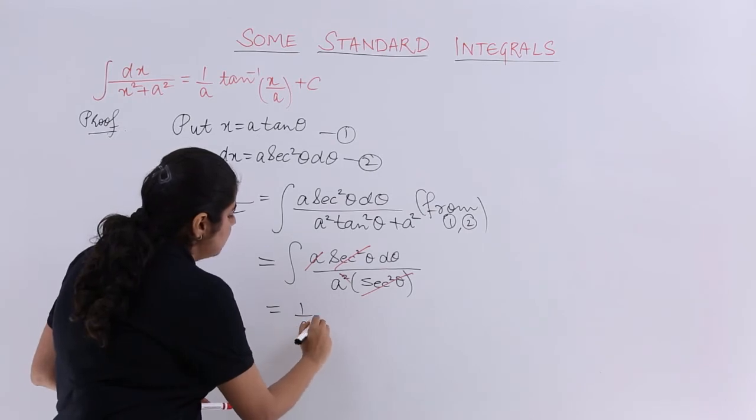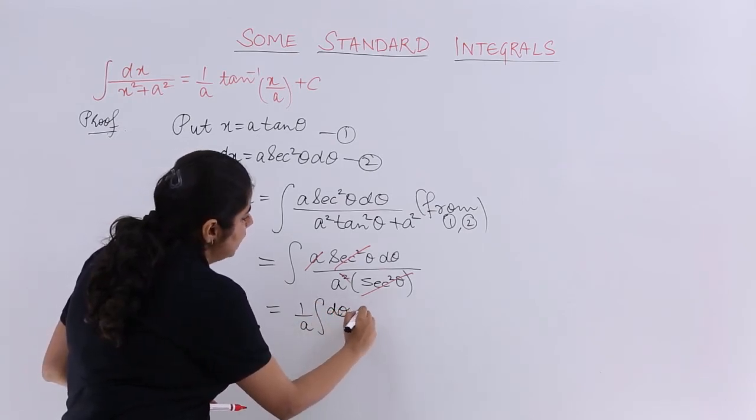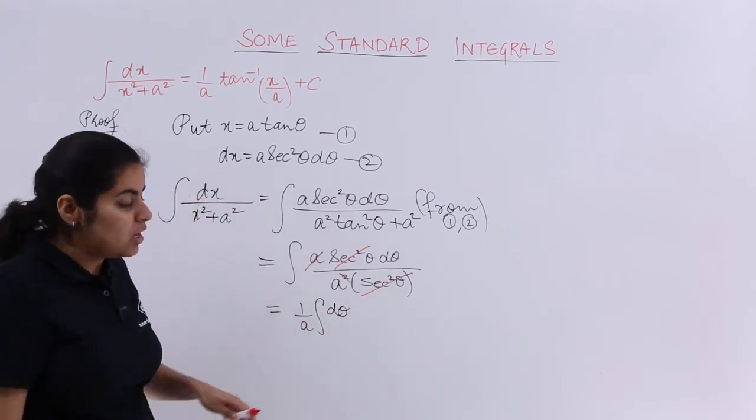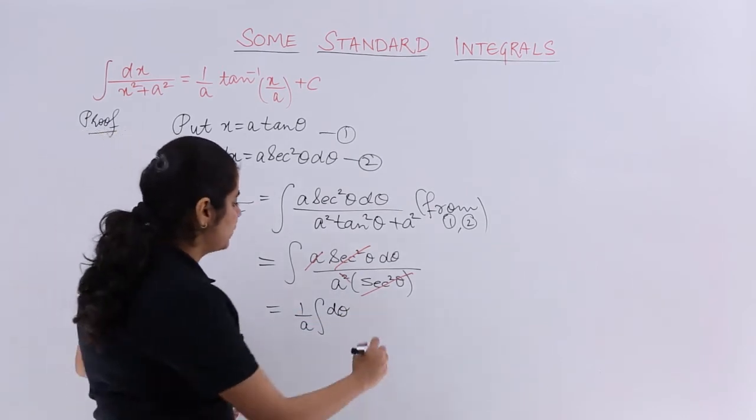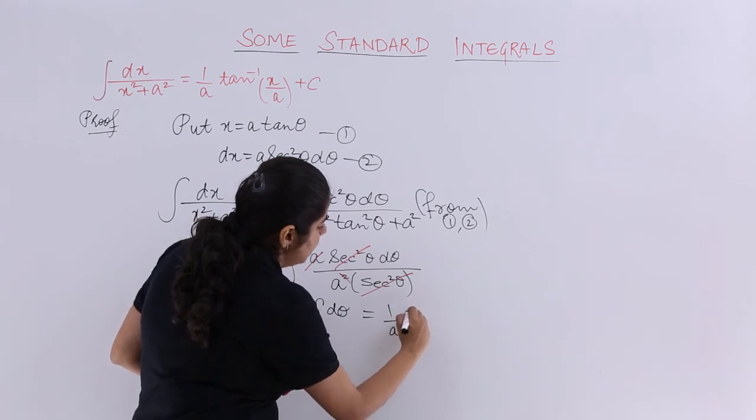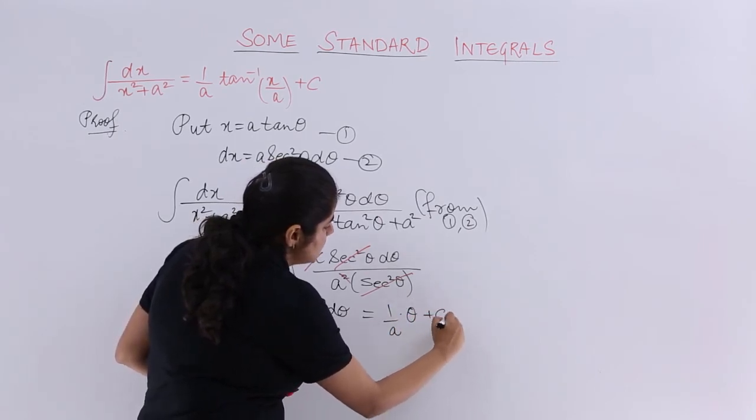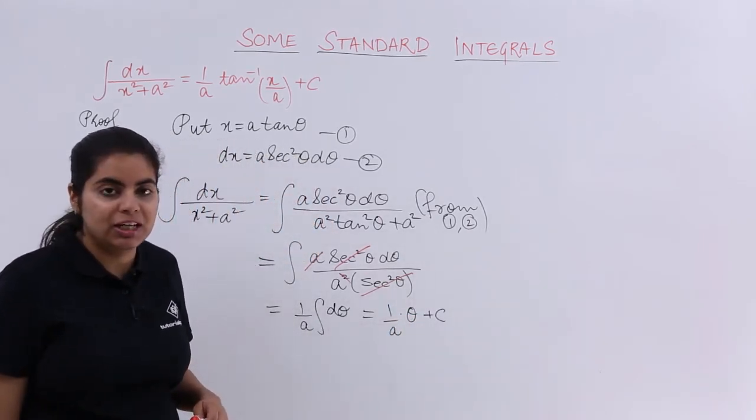So it is 1 upon a coming as a constant outside integration of d theta. What is integration of 1 d theta? It is nothing but theta. So it is 1 upon a multiplied by theta plus c, that is the constant of integration.